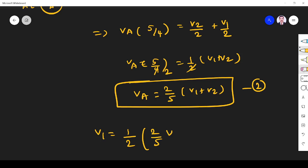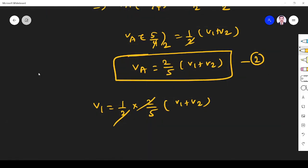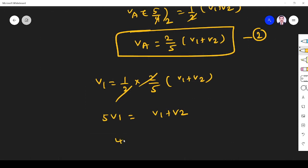This is common, so I take it outside. 1 by 2 times va is 2 by 5 times v1 plus v2. Cancel. So 5v1 is equal to v1 plus v2. 4v1 is equal to v2. This implies v1 by v2 is equal to 0.25.